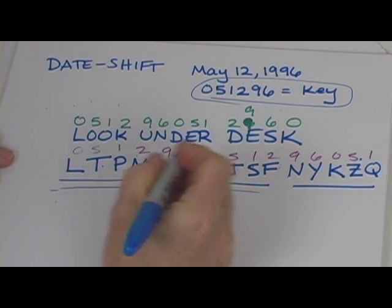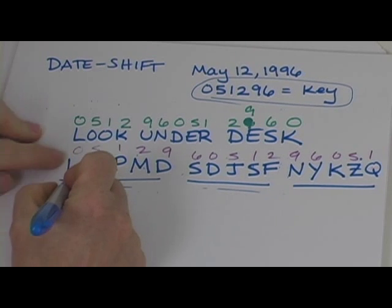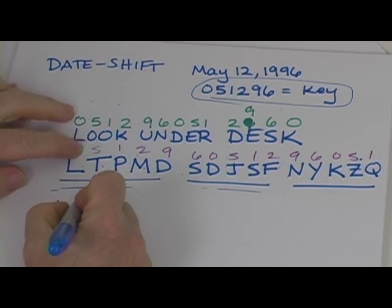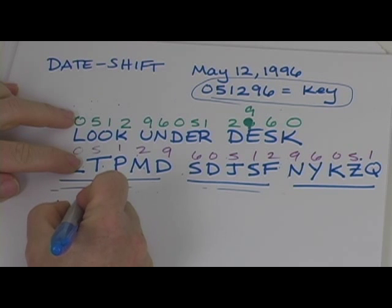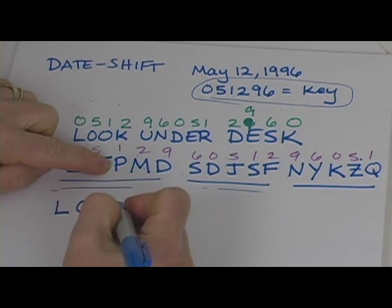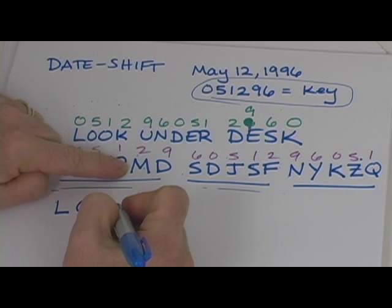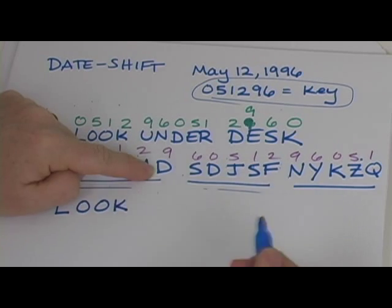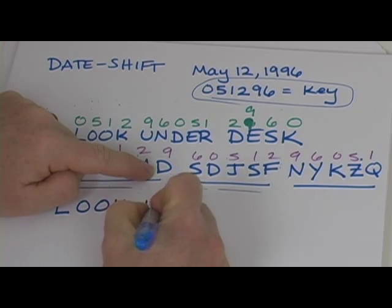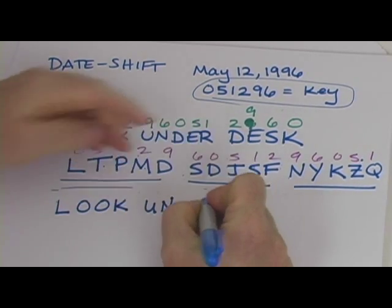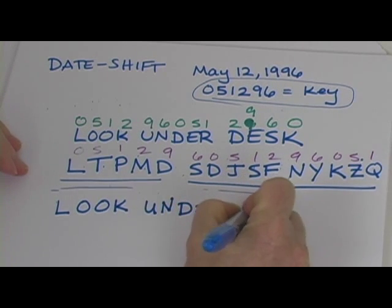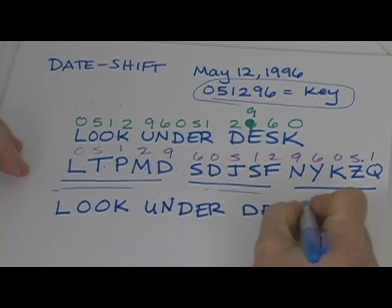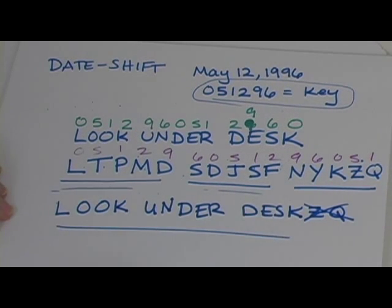And so we're going to shift each one backwards, so L is no shift, T shifted back five, that's going to be O, P shifted back one is O, M shifted back two is K, D shifted back nine, you're going to have to wrap around the alphabet and you find it's a U. Okay, and then you can continue to find it actually says look under desk. And then you'll also have that, which you can scratch off, okay.